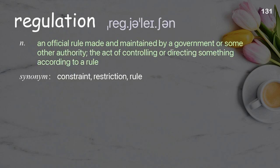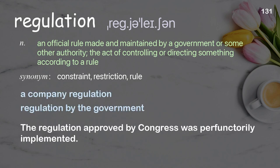Regulation: an official rule made and maintained by a government or some other authority; the act of controlling or directing something according to a rule. Examples: a company regulation, regulation by the government. The regulation approved by Congress was perfunctorily implemented.